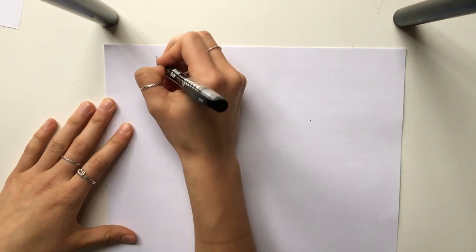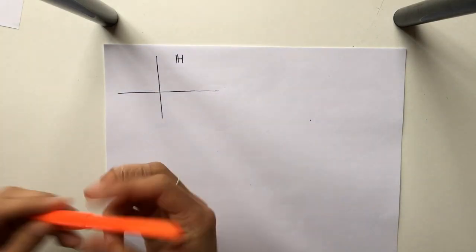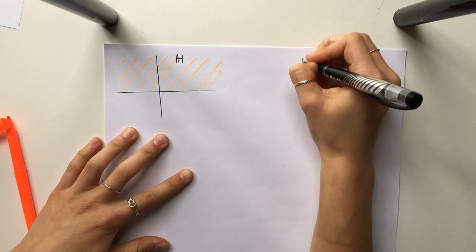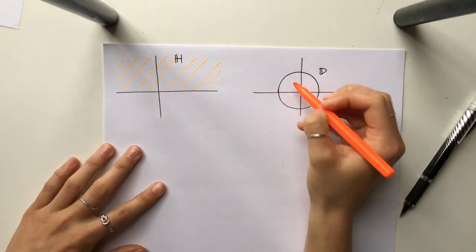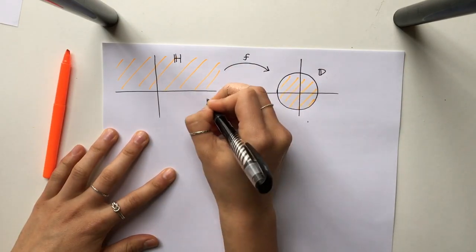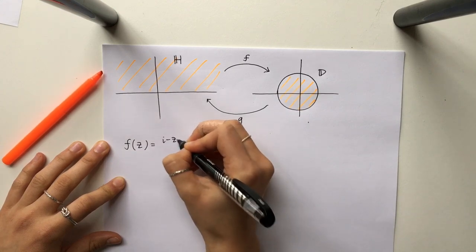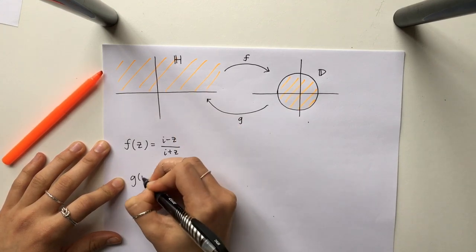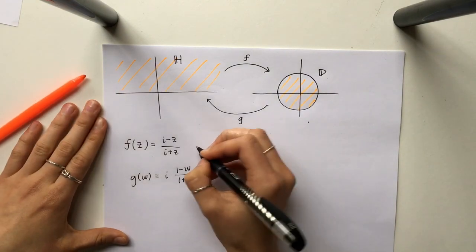Now we're going to talk about and prove one of the most important concepts of conformal maps, which is the conformal map between the upper half plane in the complex plane and the unit disk. And if we can understand this proof then a lot of things follow pretty easily. So here we have the upper half plane and the unit disk, and then function f maps H to D and function g maps D to H, and they're written below.